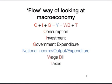So there's a flow way of looking at the macroeconomy, which is essentially to think of the flow of money or blood around the system. C plus I plus G — consumption plus investment plus government expenditure — equals Y, which is national income, output, or expenditure. That's the wage bill plus taxes plus profits.